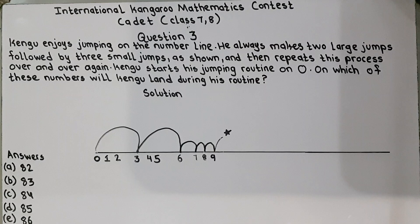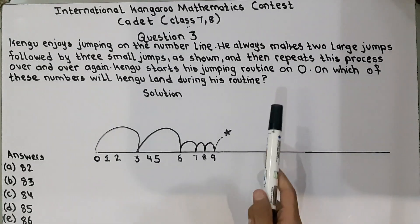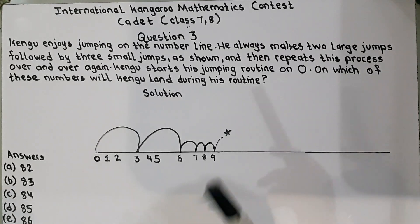So in every long jump, he leaves two numbers and small jumps. If he is on six, he goes on seven and eight and nine. He repeats this process over and over again continuously.